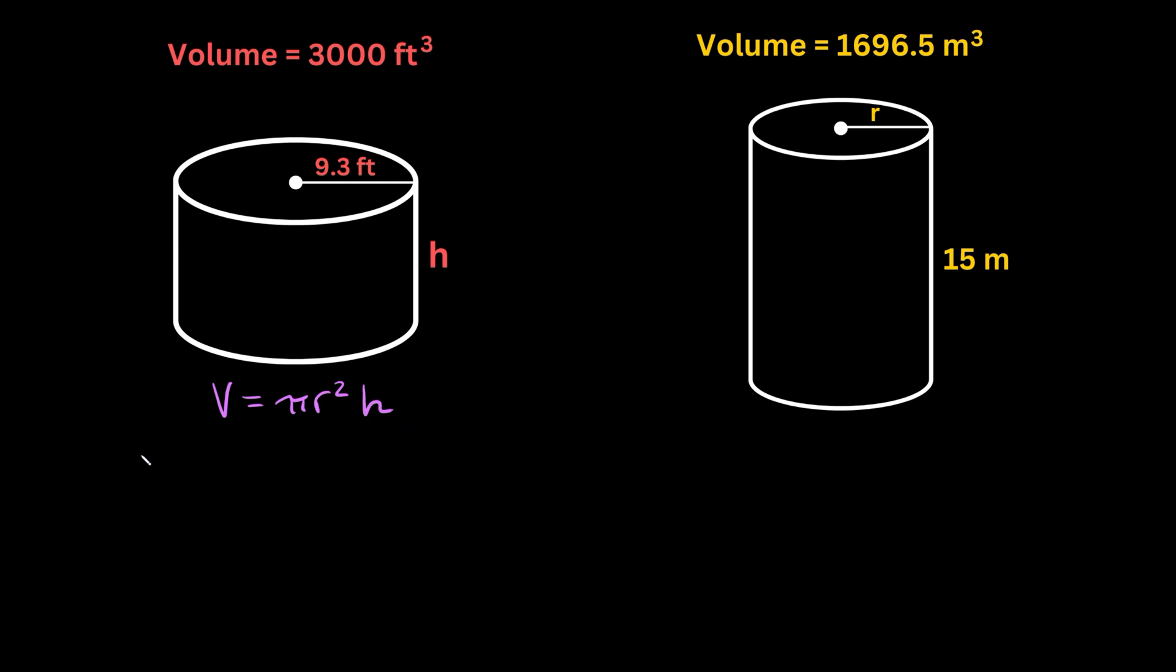So let's just plug in what we know. First of all it gives us the volume, it's 3,000 feet cubed. So we're going to say 3,000 is equal to pi times the radius squared, and the radius is 9.3. So we'll put 9.3 squared, and then we don't know the height, so we'll just leave that as h. So then here we're going to get that 3,000 is equal to pi times 9.3 squared. If you plug that into your calculator, you'll get that this is 86.49, and we're multiplying by h.